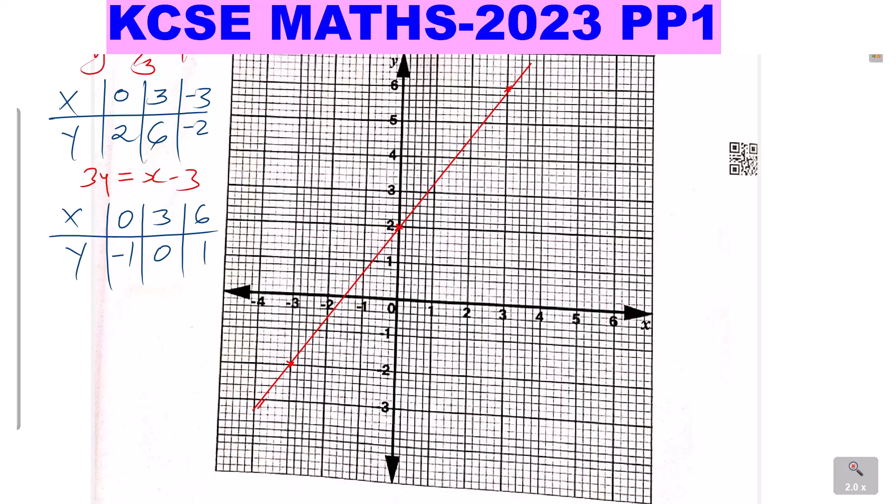Then the other line, 3y is equal to x minus 3. 0, negative 1. Plot that. 0, negative 1 is here. Then we have 3, 0. 3, 0 is there. Then 6, 1. 6, 1 there. So draw a straight line passing through the three points.